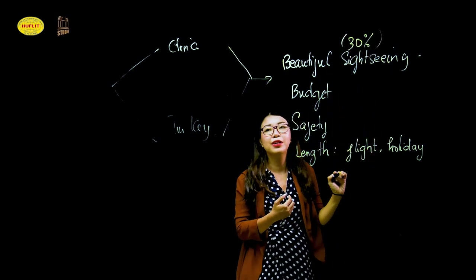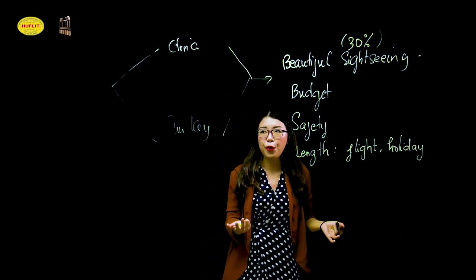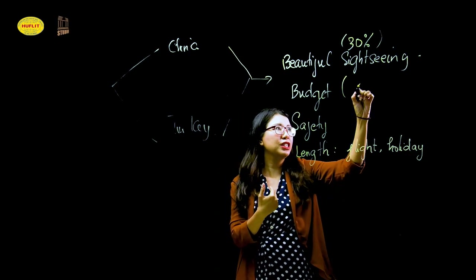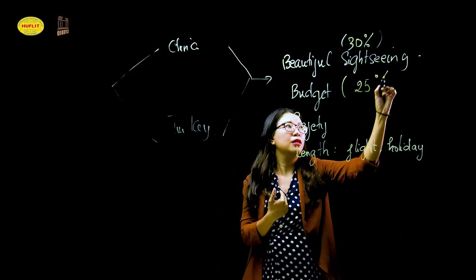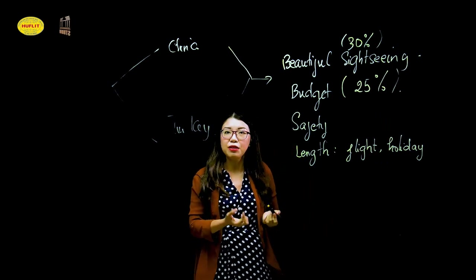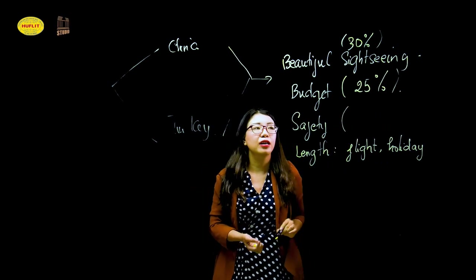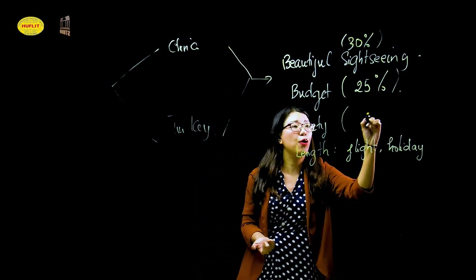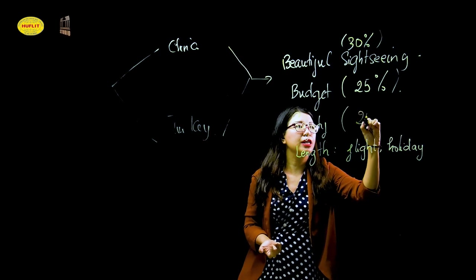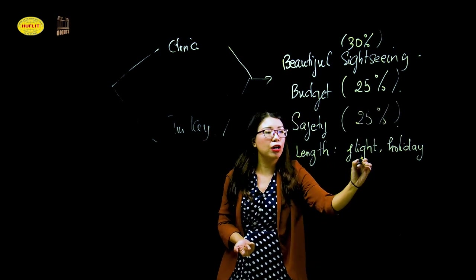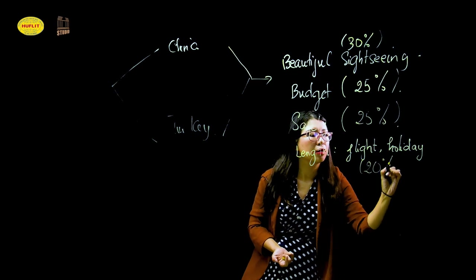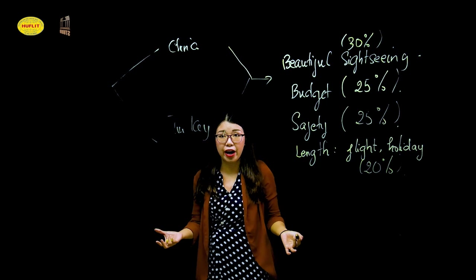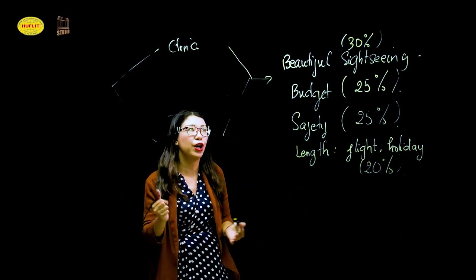Budget is very important, so it contributes about 25%. Safety is very concerning — we need to feel safe — so it also contributes about 25%. And land is going to be 20%.